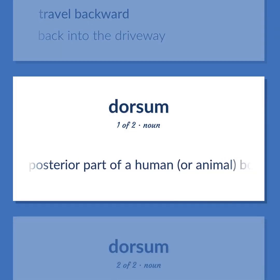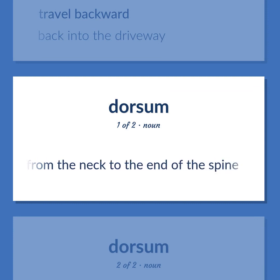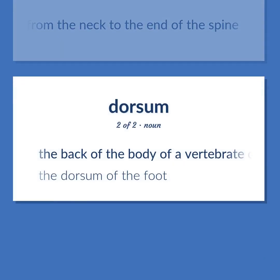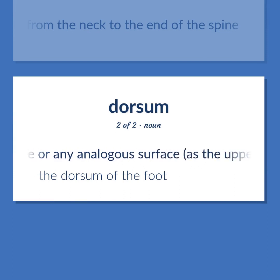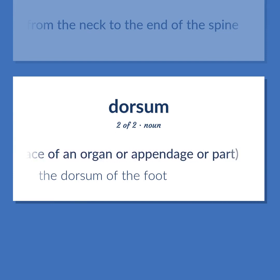The posterior part of a human or animal body from the neck to the end of the spine. The back of the body of a vertebrate, or any analogous surface, as the upper or outer surface of an organ or appendage or part. The dorsum of the foot.